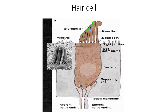At the basal end of the hair cell, there are nerves of two types: one is the afferent nerve, and another is the efferent nerve. The afferent nerve carries sensation from the hair cell to the brain, whereas the efferent nerve carries signals from the brain to the hair cell.